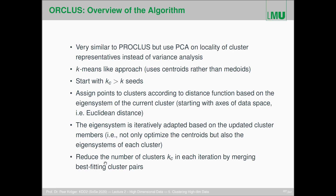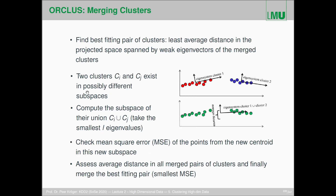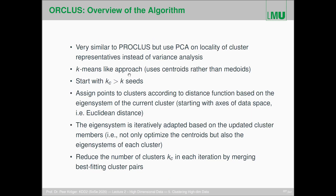We also reduce the number of clusters in each iteration by merging the best-fitting cluster pairs. The only remaining question is what counts as best-fitting. We compute the centroid and also apply PCA to get the eigensystem, then use Mahalanobis distance with the eigensystem as the similarity matrix instead of Euclidean distance to assign points to the closest centroid.